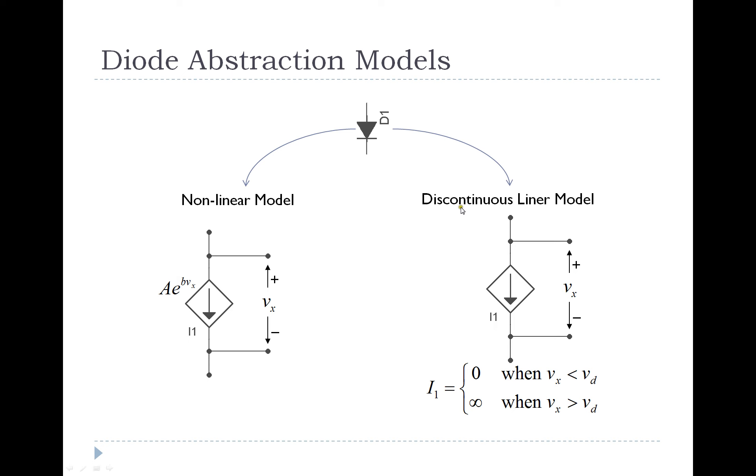The other thing that we've already talked about is this discontinuous linear model. So instead of worrying about this exponential behavior, what we do is we just pretend that when we exceed the built-in diode voltage, that this is just going to act like a wire.